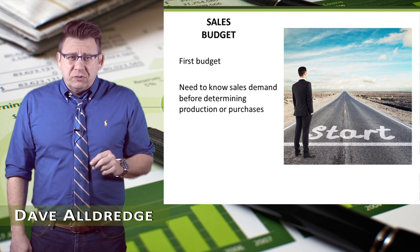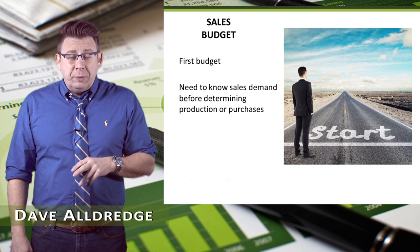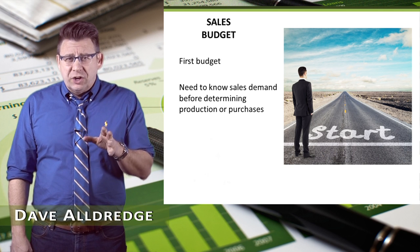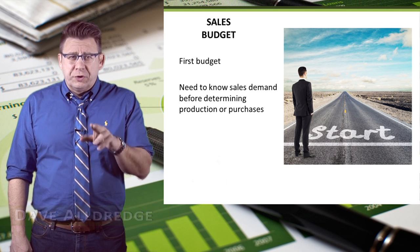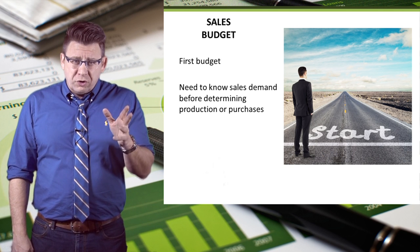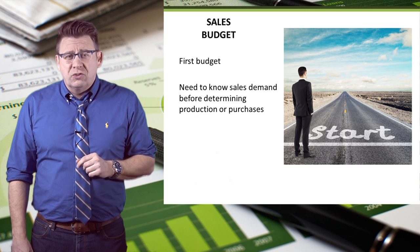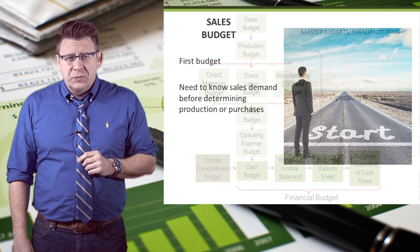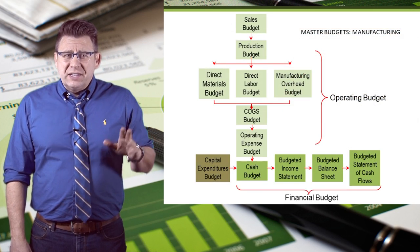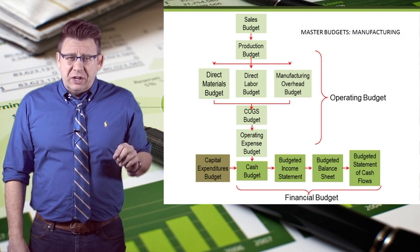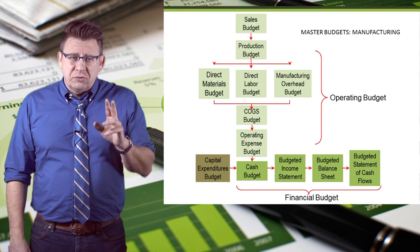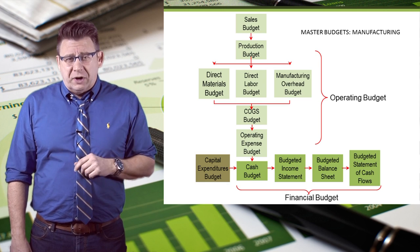Everything starts with the sales budget. It would be impossible to know how many units to produce or purchase without first knowing how many units we're going to sell. You can see from the master budget that the sales budget starts the process.